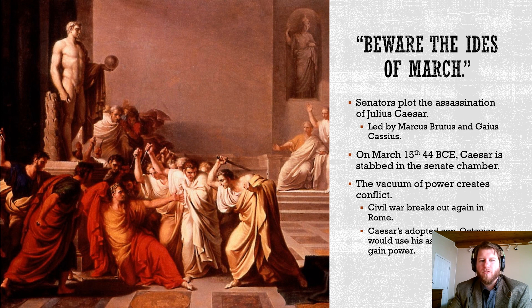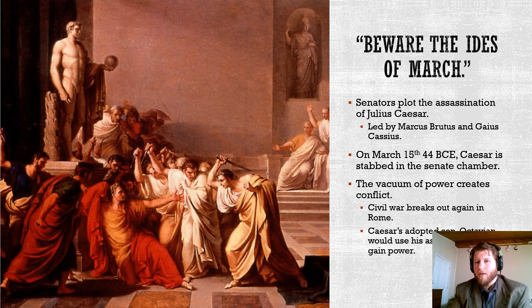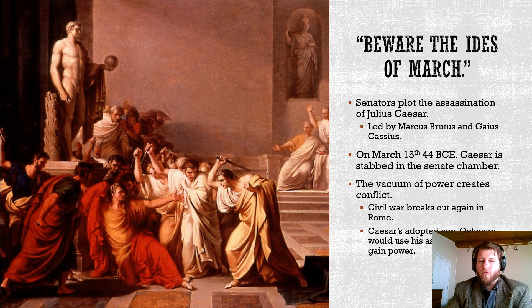Caesar had been warned to beware the Ides of March — Idus Martii, the 15th of March — that something bad was going to happen. And it turns out a group of senators had planned to assassinate Julius Caesar. Those assassins were led by Marcus Brutus and Gaius Cassius. The name Brutus, if you remember, is the same family name as the man who overthrew the final king of Rome, Tarquinius Superbus — that's part of the Brutus legacy. On March 15th, 44 BC, Caesar is stabbed to death on the floor of the Senate chamber — actually Pompey's theater, which was being used as the Senate during a renovation.